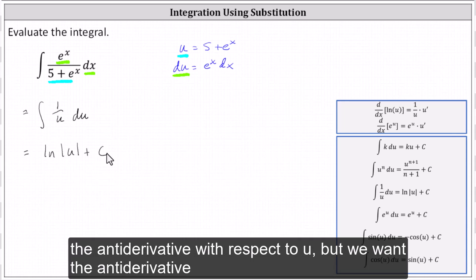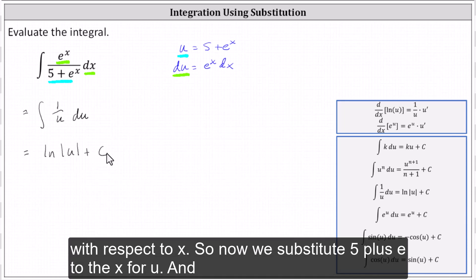This is the antiderivative with respect to u, but we want the antiderivative with respect to x, so now we substitute 5 plus e to the x for u.